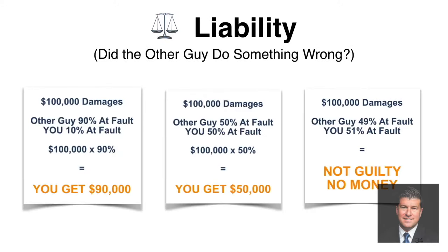It's important to know how liability works if you go to court on a car crash case claiming injuries. The simplest case: a judge or jury decides the other guy caused the crash 100%. If you have $100,000 in damages and the other guy caused the crash 100%, you end up with a $100,000 verdict. That makes sense — he's 100% responsible and caused $100,000 worth of damage.